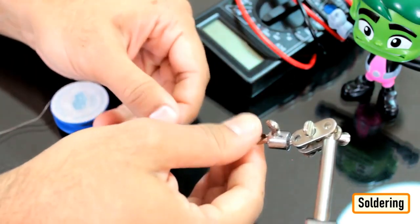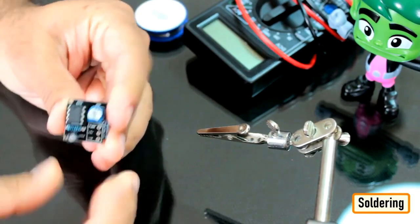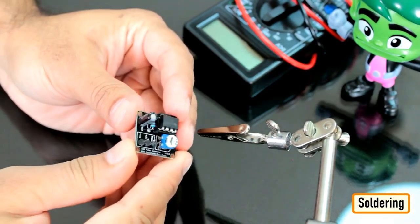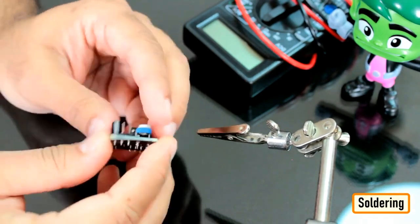Followed by the 10 microfarad capacitor to the board. Once done, let's insert the 555 timer IC to the IC base. To conclude the setup, I have soldered 3 male pin headers to the board.